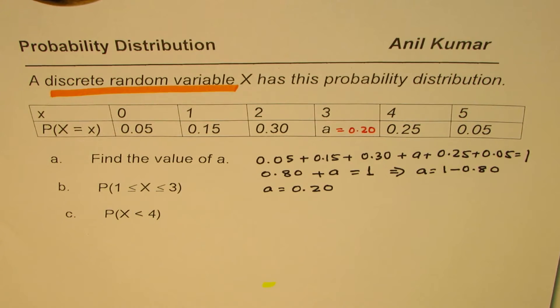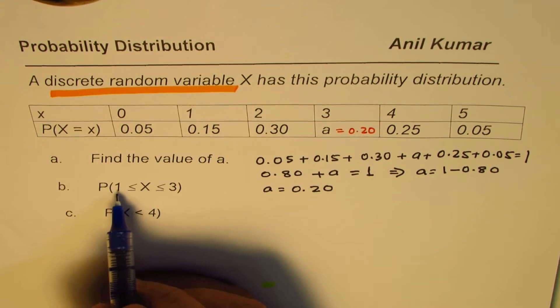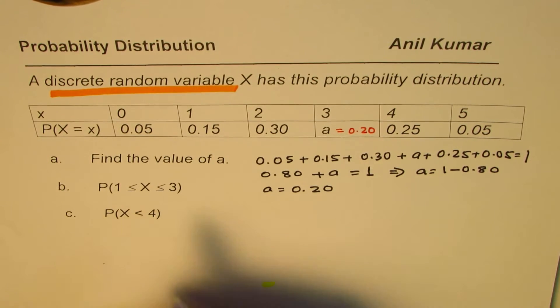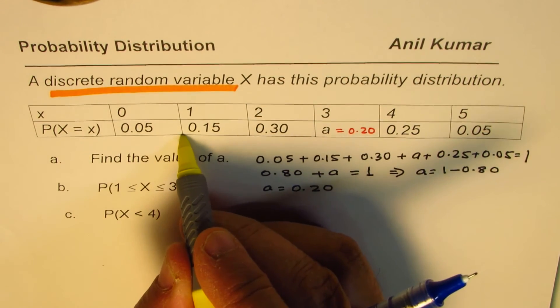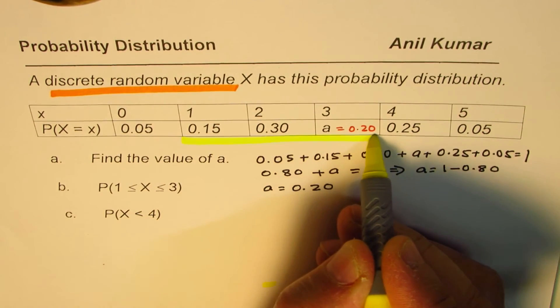Now, second question is, what is the probability for X greater than or equal to 1 and less than or equal to 3? In this particular case, we should be just adding up these three probabilities.